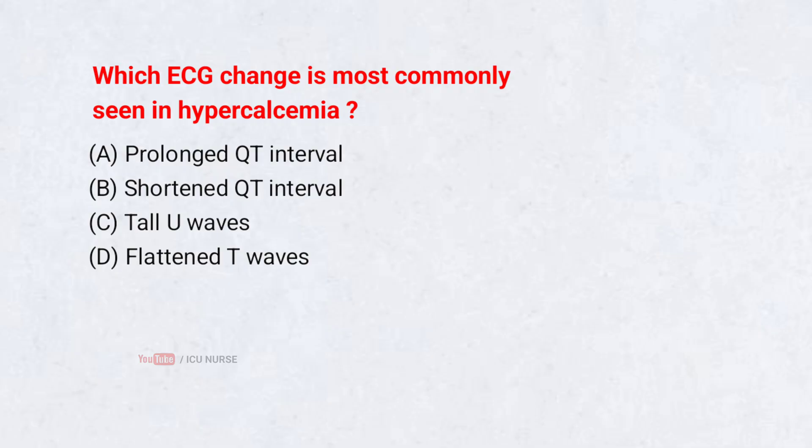Which ECG change is most commonly seen in hypercalcemia? A. Prolonged QT interval, B. Shortened QT interval, C. Tall U-waves, D. Flattened T-waves. Correct answer: B. Shortened QT interval.